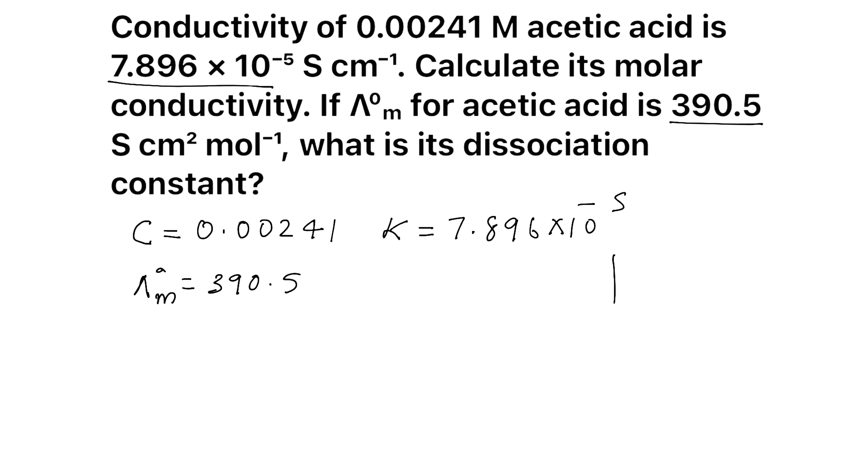Now, what we have to find? We have to find dissociation constant. What is the equation? C alpha square by 1 minus alpha. We know C, but we don't know alpha. So, how to find alpha? We can find alpha by dividing molar conductivity by limiting molar conductivity. But we don't know molar conductivity. That we have to find first. What is the equation for molar conductivity if conductivity is given? It is K or kappa into 1000, conductivity into 1000 by C.